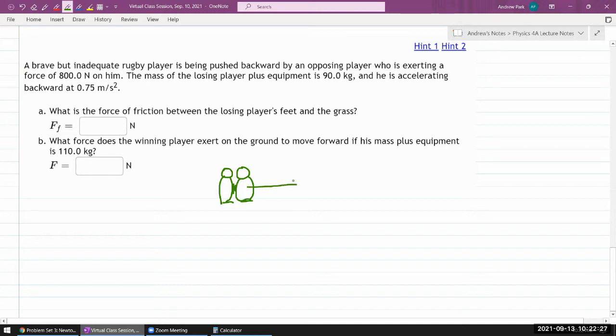If you drew it the other way that's fine, what matters is consistency. So he's been pushed backward by 800 newtons. The mass of the losing player, so that would be this person, harsh losing player, plus the equipment is 90 kilograms and he is accelerating backwards at 0.75 meters per second squared. Part a asks what is the force of friction between the losing player's feet and the grass.